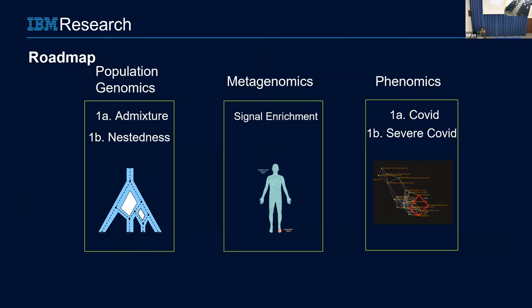This is the roadmap. I want to talk about three omics spaces: one on population genomics, one on metagenomics, and one on what we call phenomics. I will take problems from each of these spaces, give you a background of the problem, and try to show you how we answer some questions in that omic space using topology or TDA, and where we believe that topology gave us a better solution.